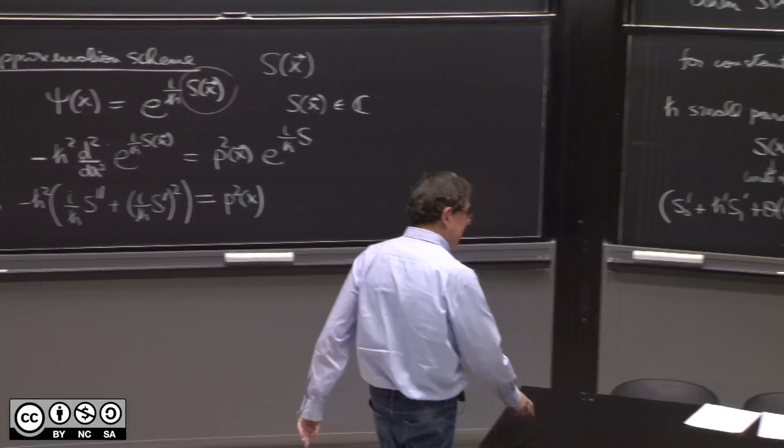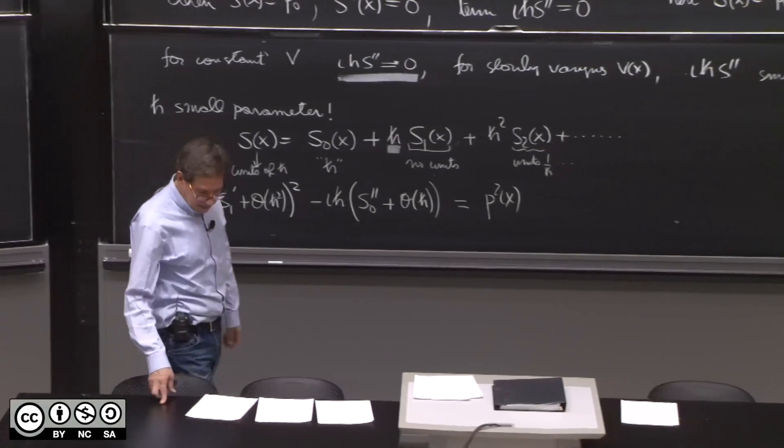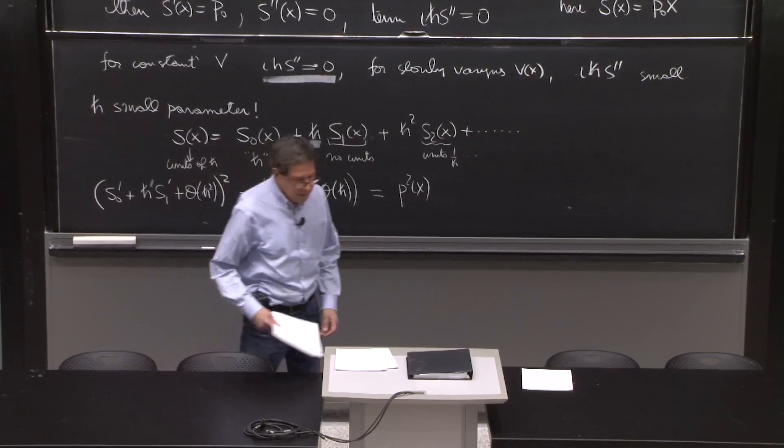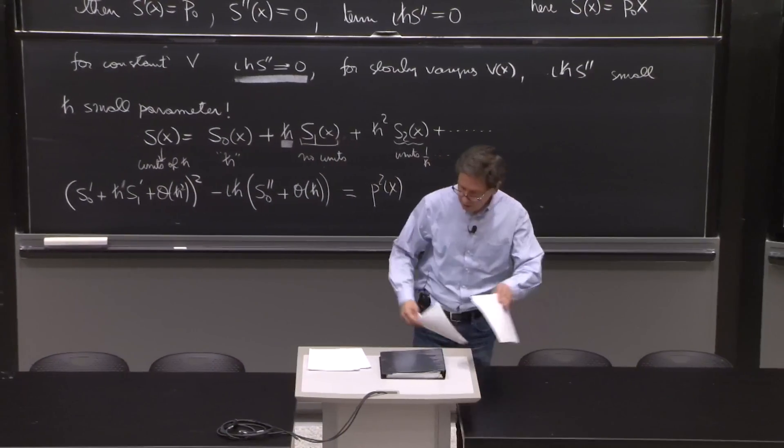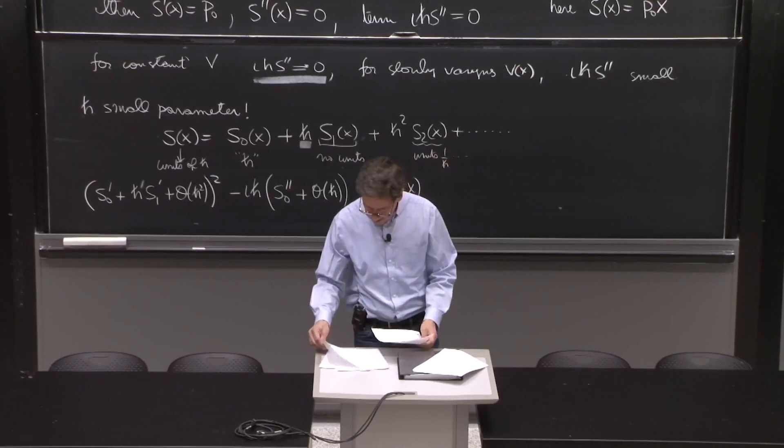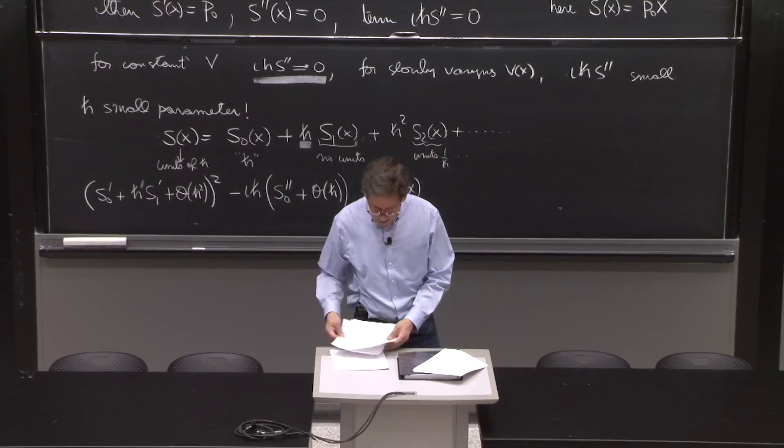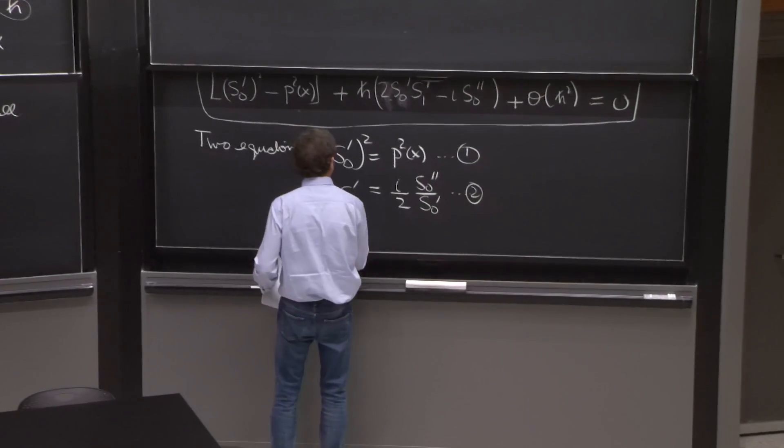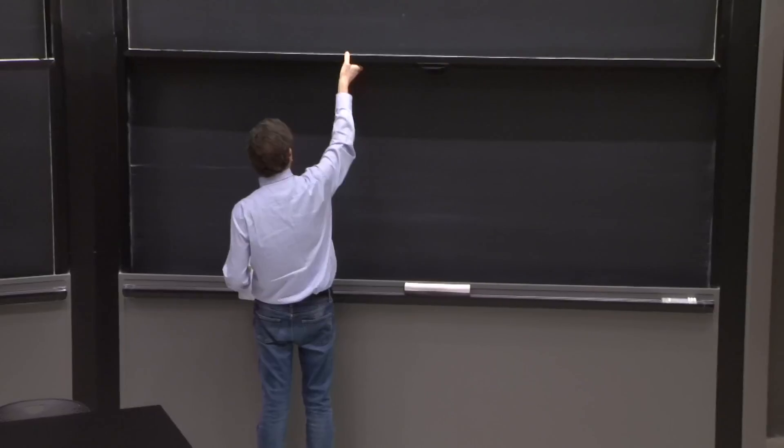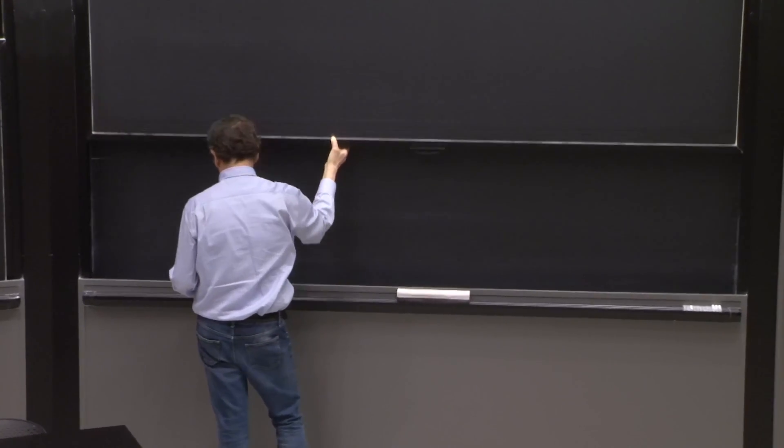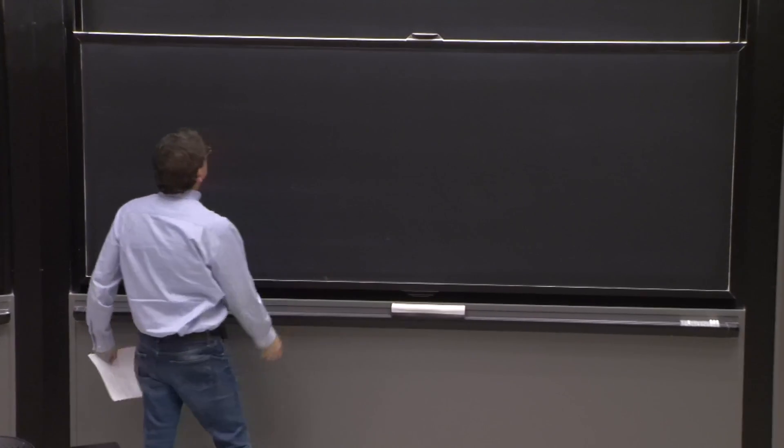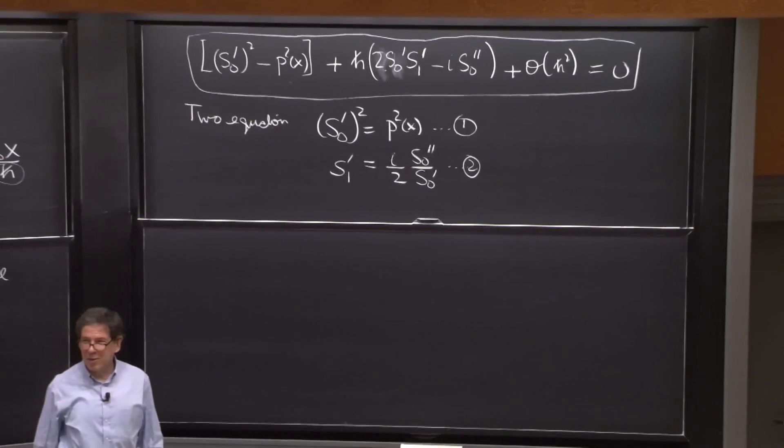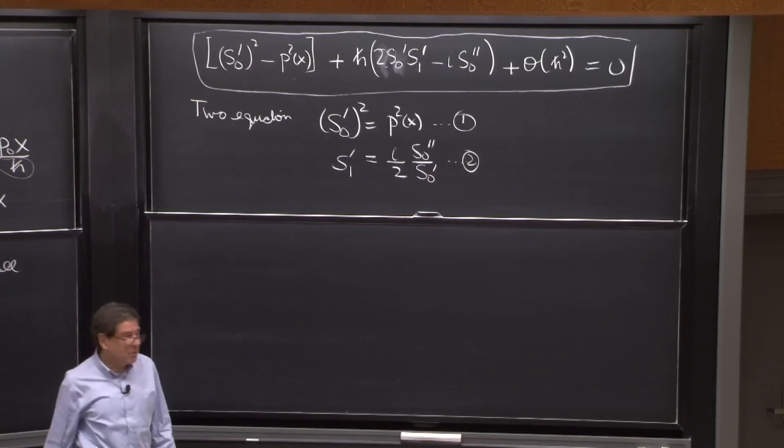OK, so let's try to solve this. Semi-classical approximation is about solving these equations. So let's see what we get. Well, the first equation is kind of simple. I think everybody has the temptation there to just take the square root, and that's what we should do.